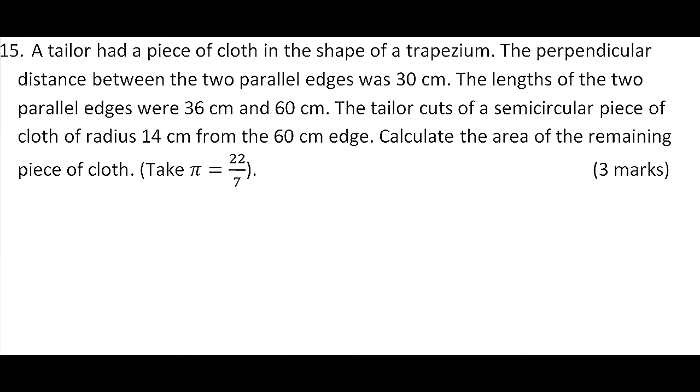Question number 15. A tailor had a piece of cloth in the shape of a trapezium. The perpendicular distance between the two parallel edges was 30 cm. The lengths of the two parallel edges were 36 and 60 cm. The tailor cut of a semicircular piece of cloth of radius 14 cm from the 60 cm edge. Calculate the area of the remaining piece of cloth. Take π is equal to 22 over 7.